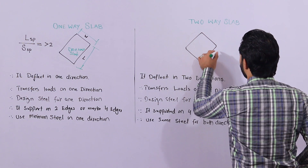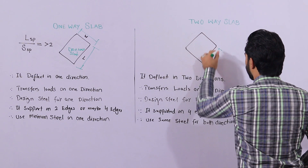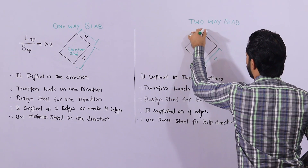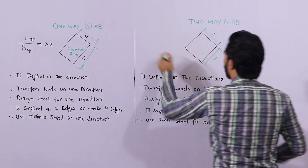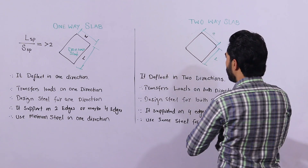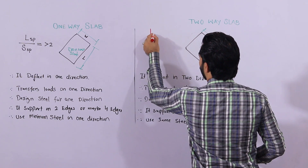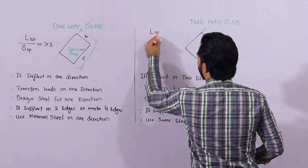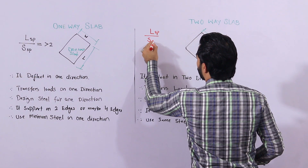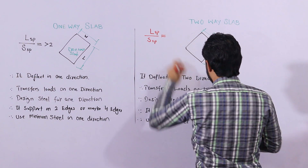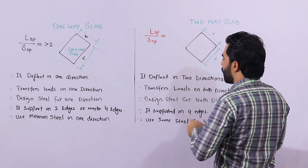The next one is two-way slab. How will you know the two-way slab? Suppose this is the longer span and this is the shorter span. Simply, longer span divided by shorter span gives a value less than two — that is a two-way slab.